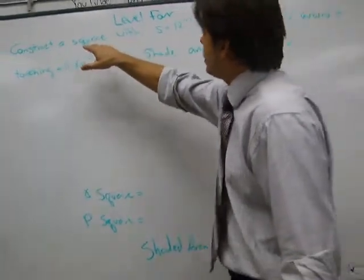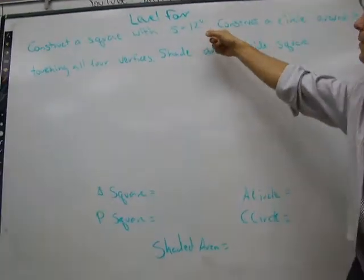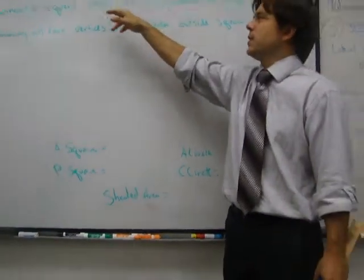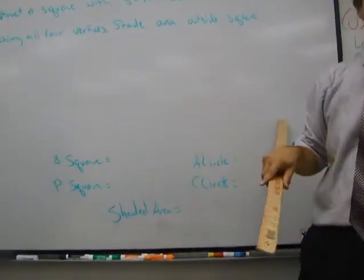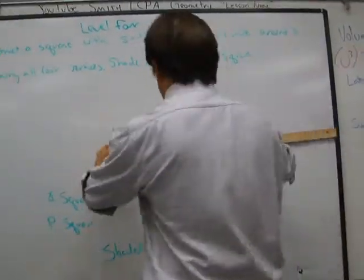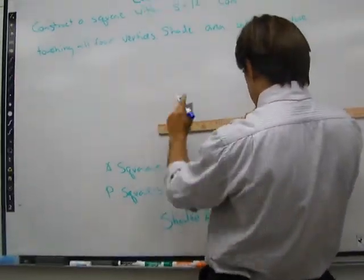Here we go, level four. Construct a square with S equals 12 inches. So simple things. What does square mean? Four equal sides, four 90 degree angles. So four equal sides, four 90 degree angles.